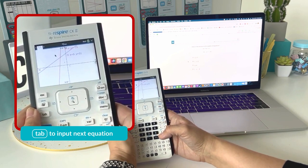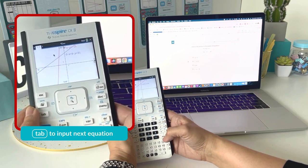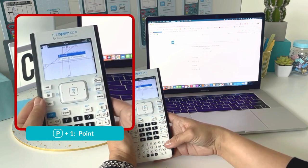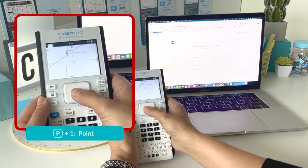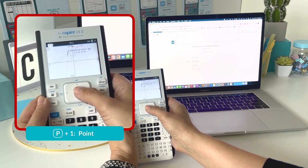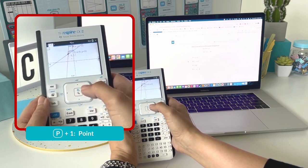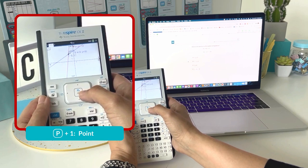Now to find the solution to these systems of equations, I want to find the intersection point. I'm just going to press the letter P and choose option one for point. And I'm just going to move my cursor over and place it on the intersection point. And I have the answer negative 2, 3.